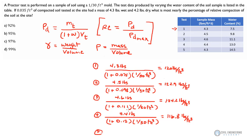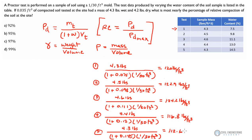Last but not least, we'll run the numbers for test number five. We had 4.3 pounds, and all that is divided by 1 plus 0.145, which is our water content, and again times 1/30th of a cubic foot. After all that, we should get through test number five and figure out we've got 112.6 pounds per cubic foot. We've just used this dry density formula to calculate the dry densities for each of the tests.